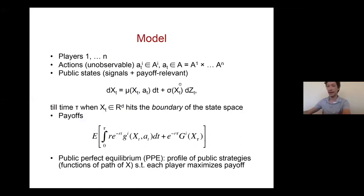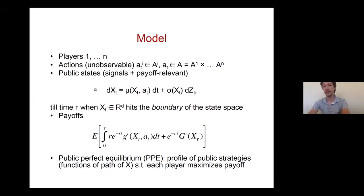So the model has N players and actions are unobservable. Players choose unobservable actions, but some information about these actions is available through signals. There can be signals which are pure information, and signals which are also payoff-relevant states. There is a whole vector of signals, and the drift of the signals depends on the actions of the players, while observation is imperfect due to noise.